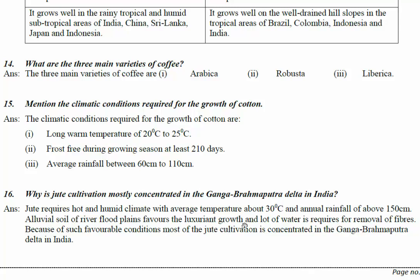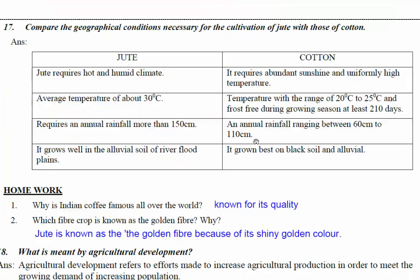A lot of water is required for the removal of fibers. Because of such favorable conditions, most jute cultivation is concentrated in the Ganga-Brahmaputra Delta in India, especially in the Sundarbans.